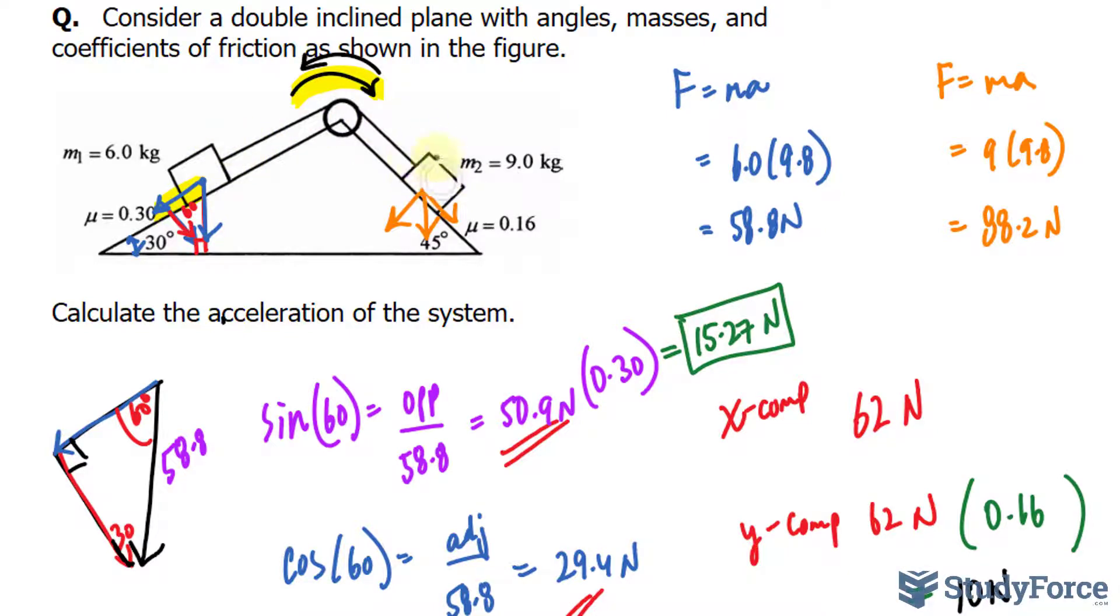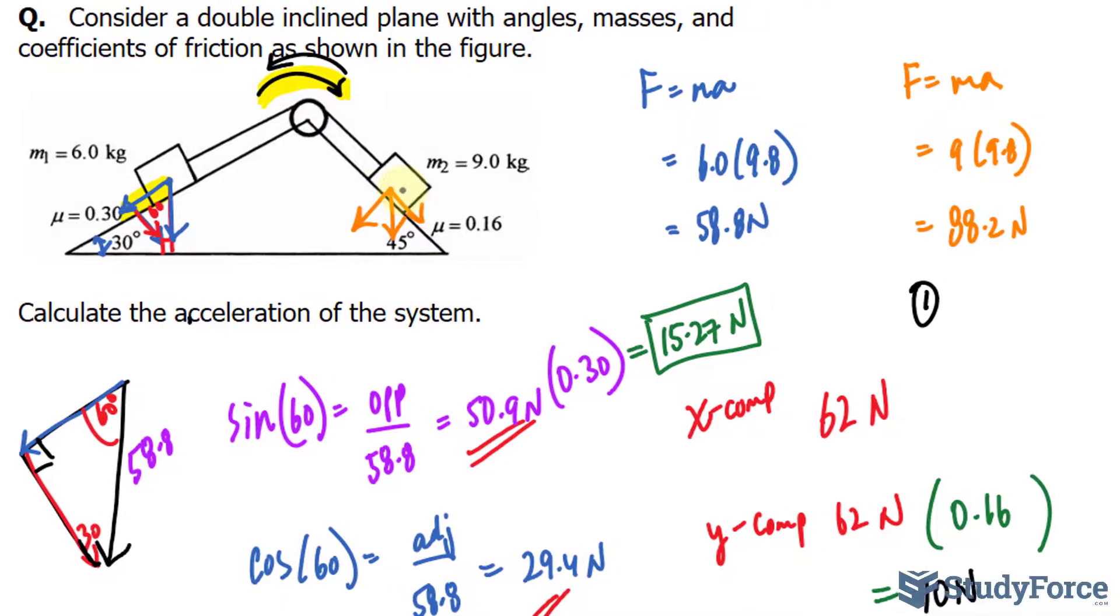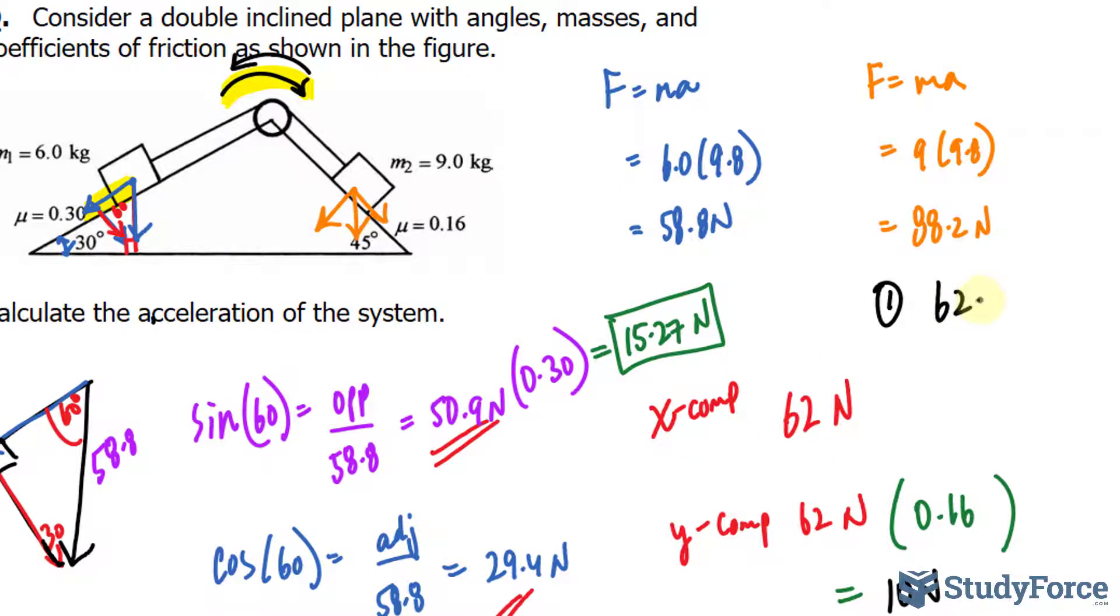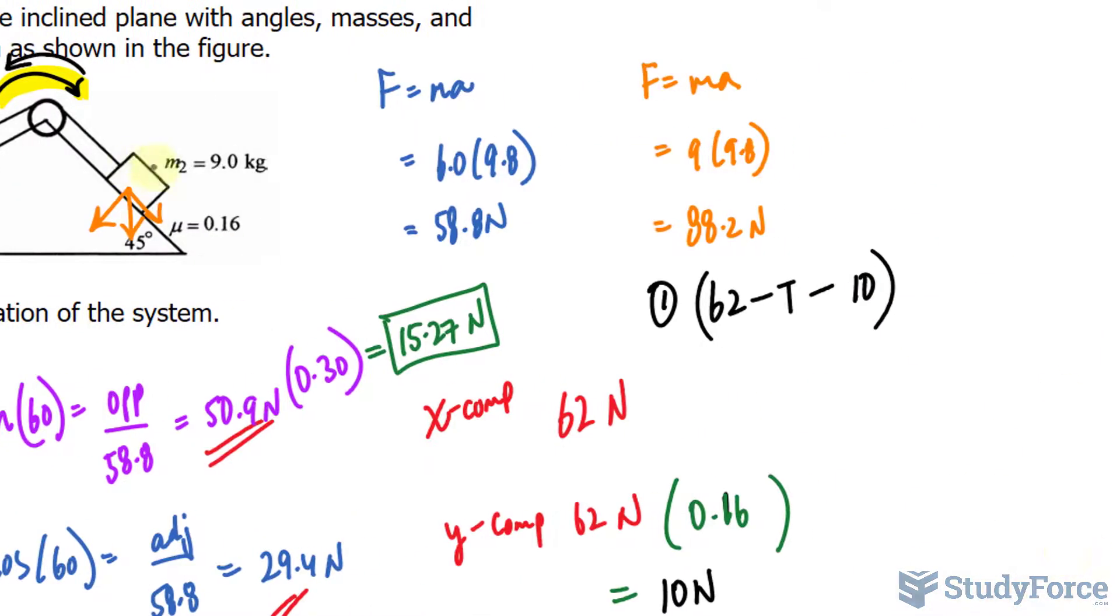Let's represent an equation that relates the acceleration and tension for this mass first. It doesn't matter which one you choose first, but let's just choose this one. We have the magnitude along the plane. We found out that it was 62 minus the tension and minus what we found here when we multiplied 62 times 0.16, that's 10. And that is equal to the mass—remember we're using F equals ma, right? That is the force—is equal to the mass of 9 times an acceleration that we are looking for.